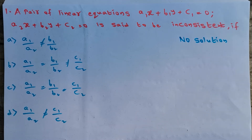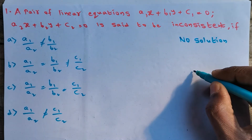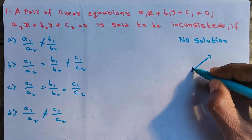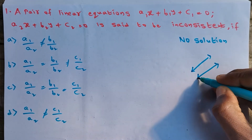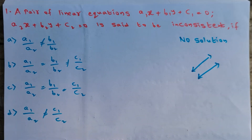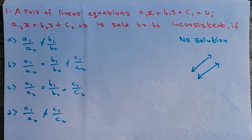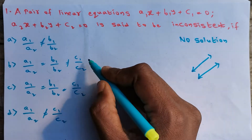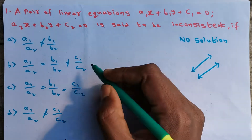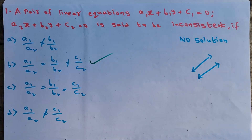When the lines don't have a solution, it means the two lines are parallel to each other. If the two lines are parallel to each other, they don't have any solution. The condition for parallel lines is: a1/a2 = b1/b2 ≠ c1/c2. So option B is the correct option.